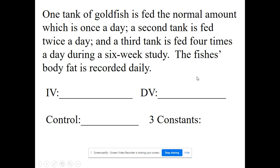Another example: one tank of goldfish is fed a normal amount of food — once a day; a second tank is fed twice a day; a third tank is fed four times a day, during a six-week study. Body fat on the fish is recorded daily. The independent variable is the amount of food given. The dependent variable is the fish's body fat. The control is the tank fed the normal amount — once per day. Constants include the same type of goldfish, the same water, and the same water temperature.